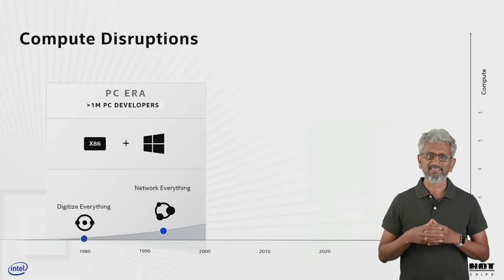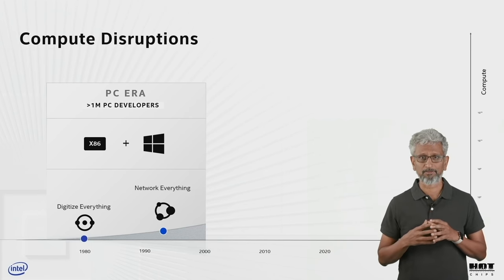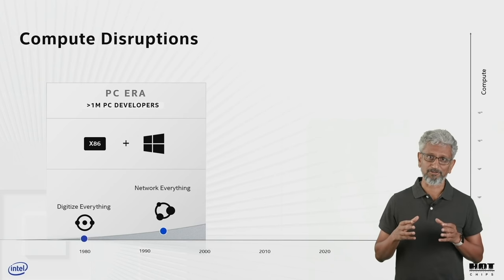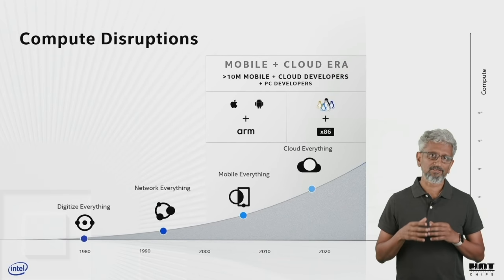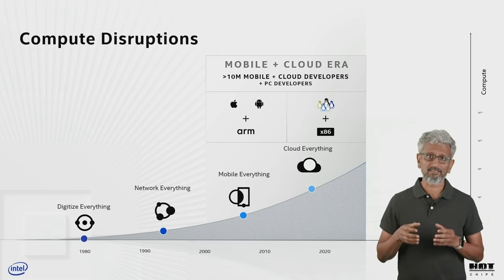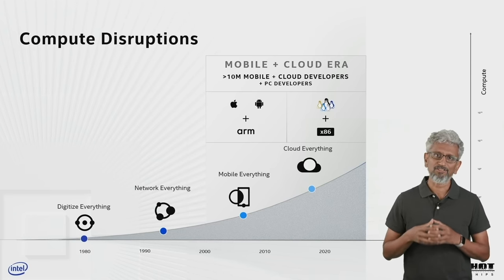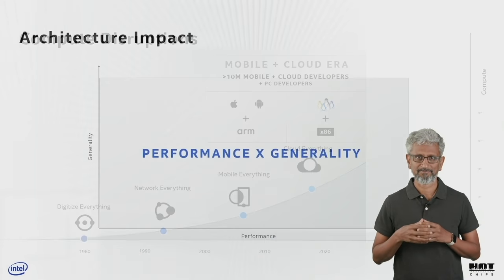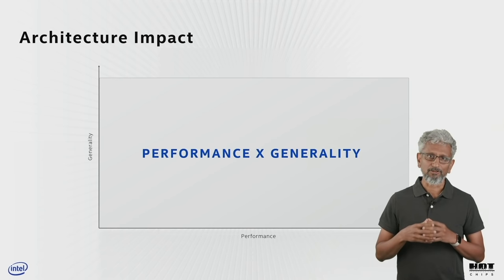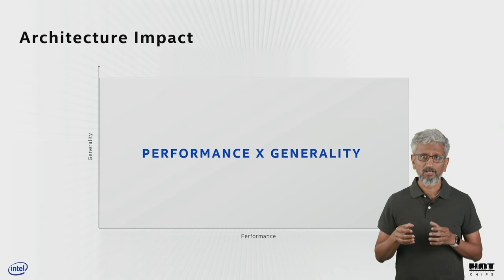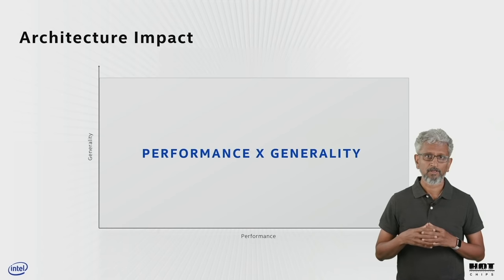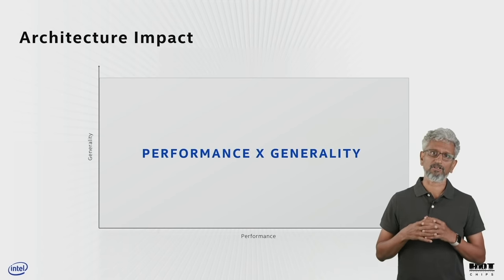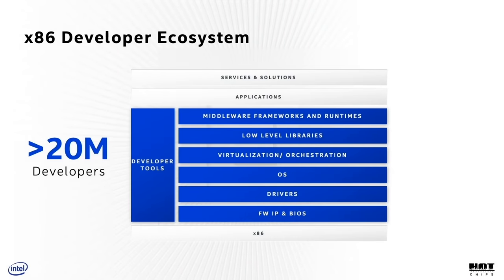In the PC era, the x86 and Windows API hardware-software contract won the majority of mindshare and helped create a greater-than-one-million developer ecosystem. In mobile, ARM architecture with iOS and Android won the battle. In cloud, the x86 and Linux contract enabled explosive growth — establishing a greater-than-ten-million developer ecosystem. The impact of an architecture hasn't just been about performance or ISA elegance; the generality is also defined by the breadth and depth of the software stack available. We have over 20 million developers in the x86 ecosystem.